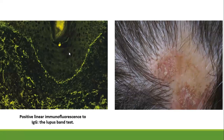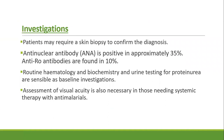On immunofluorescence, positive linear IgG immunofluorescence — the lupus band test — may be seen in exposed areas. ANA is positive in 35% and anti-dsDNA in 10%. Routine hematology, biochemistry, and urine testing for proteinuria are sensible baseline investigations. Assessment of visual acuity is essential for all patients who will be on hydroxychloroquine.